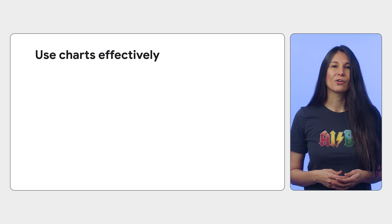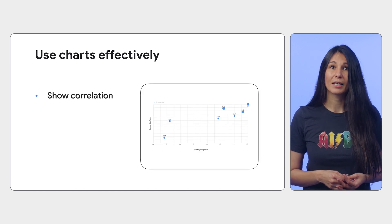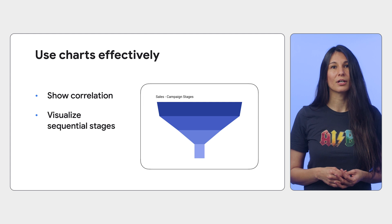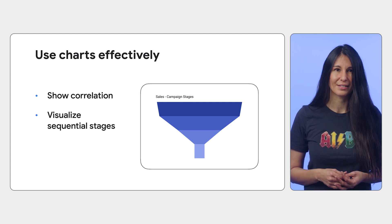Align your chart types with your core purpose. In the video description I've included a link to a guide to help you choose the right visualization. For example, a scatter plot is best for highlighting correlation between two variables, and a funnel chart can help you visualize how a metric changes over sequential stages.